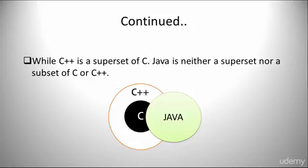While C++ is a superset of C, Java is neither a superset nor a subset of C or C++.